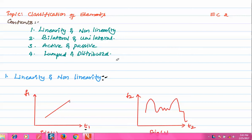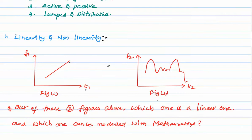First we will see linearity. Making things or components linear is a very difficult task. In order to explain this, I will take an example. Let's consider f1 is a function.